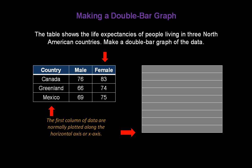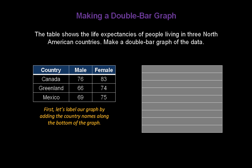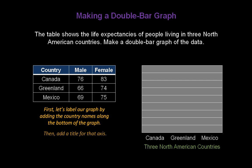The first column of data is normally plotted along the horizontal, or the x-axis. The second and third columns of data are normally plotted along the vertical axis, or the y-axis — it's these two columns that give us our double bars. First, let's label our graph by adding the country names along the bottom of the graph, evenly spaced on the horizontal axis. Don't forget to add a title: Three North American Countries.